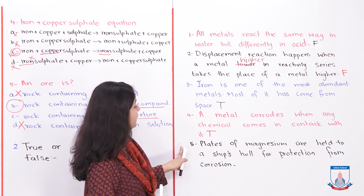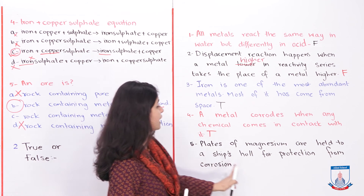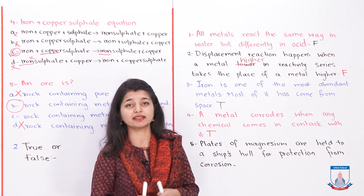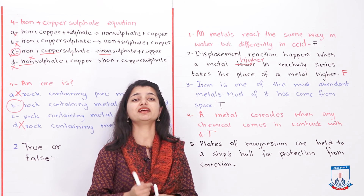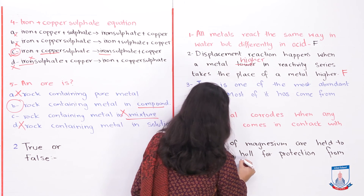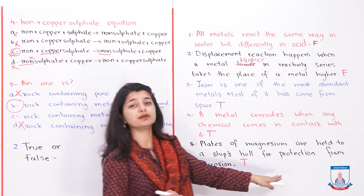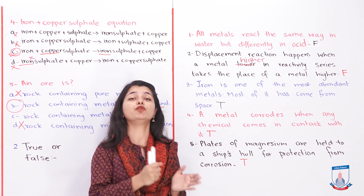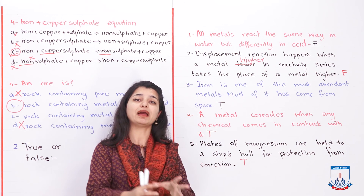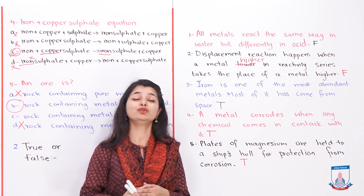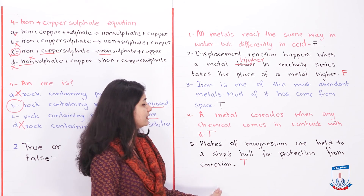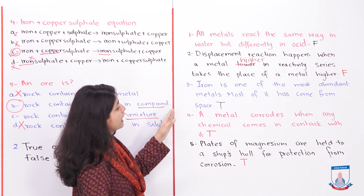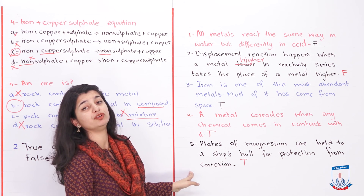Fifth statement: 'Plates of magnesium are held to a ship's hull for protection from corrosion.' This is true. A magnesium plate is attached to the steel hull so that the magnesium reacts and corrodes itself instead of the steel — this is called sacrificial protection. When the magnesium plate is fully corroded, you replace it with a new one.